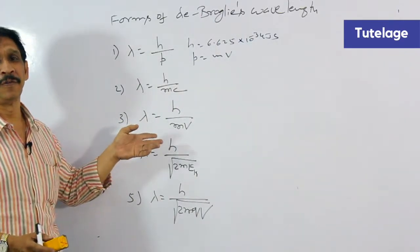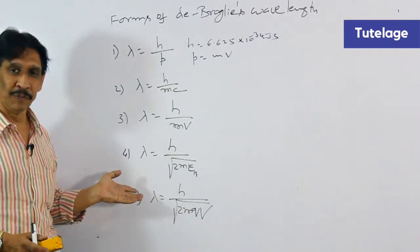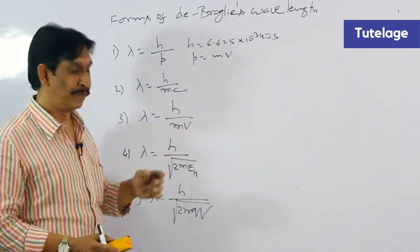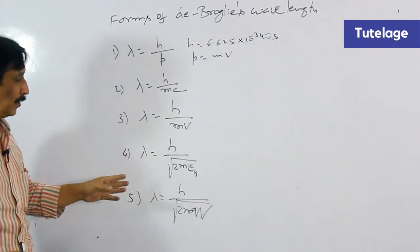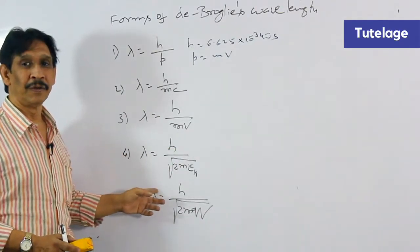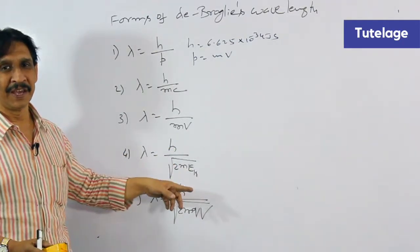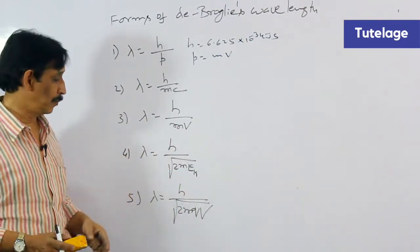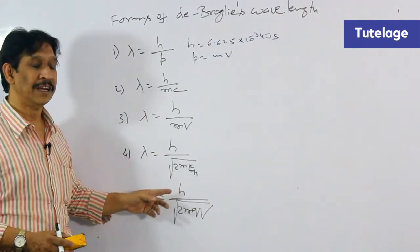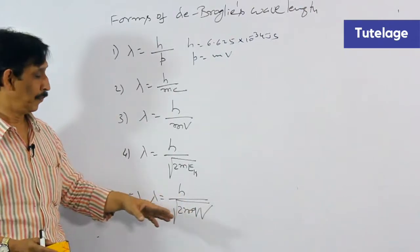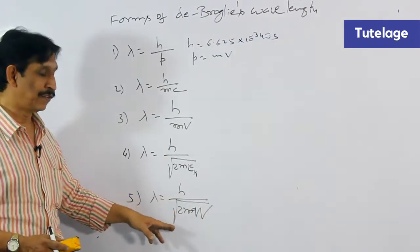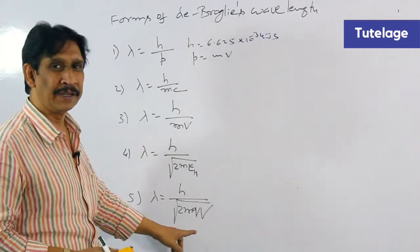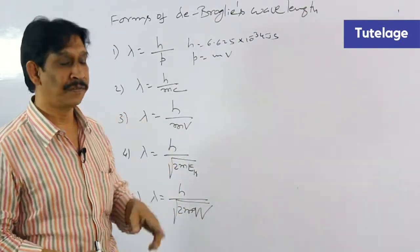For a charged particle of mass m moving with velocity v, lambda is equal to h by mv. We also derived lambda is equal to h by the square root of 2m·Ek by establishing the relation between kinetic energy and linear momentum, and lambda is equal to h by the square root of 2mqV, where h is Planck's constant, m is the mass of the charged particle, q is the charge, and V is the potential difference.